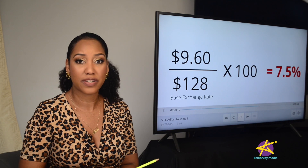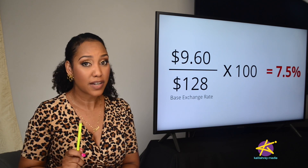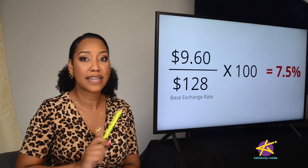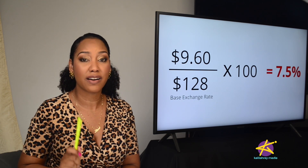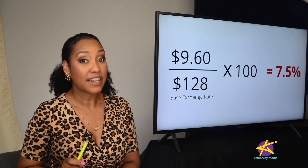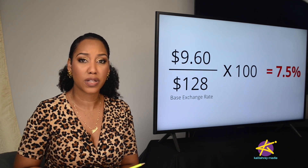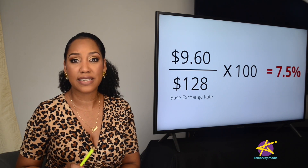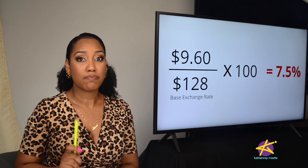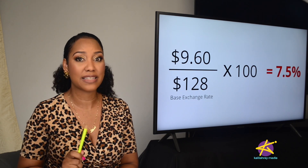This is the Foreign Exchange Adjustment as a percentage, and you can find a similar number on each month's light bill. If you look on your bill right now, you'll see this 7.5% on your August bill that was just due. This means you have to pay an extra 7.5% of the subtotal to compensate for where the dollar is today.